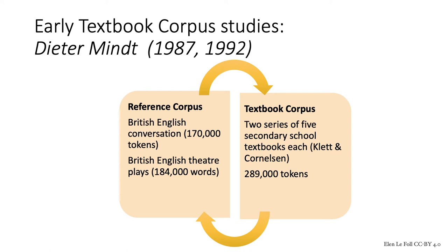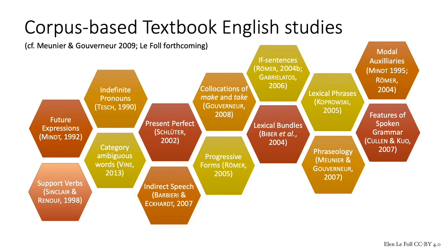He compared these empirical grammars to how these linguistic phenomena were represented in German EFL textbooks. And since then, a wide range of corpus-based textbook English studies have been conducted, but comparatively few have focused on school textbooks — more have been on textbooks used in adult education or in English for academic or specific purposes. As I've tried to illustrate here, they've focused on a broad range of lexical, grammatical, semantic and pragmatic features, but each study has focused on one or at most a handful of individual features.